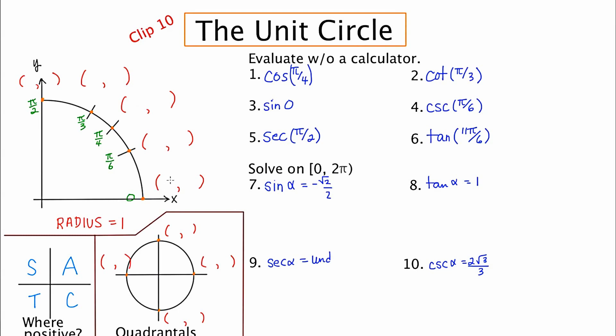This first ordered pair is one, zero. This point here in orange is one to the right of the origin and zero up. This point over here is zero over and one up. The one that's right in the middle, pi over four, which is 45 degrees, is root two over two and root two over two.